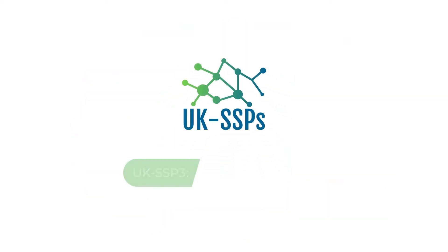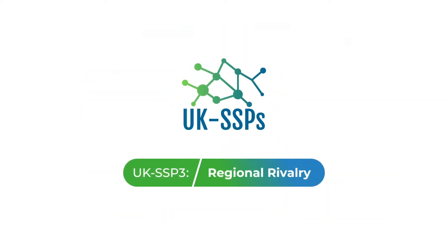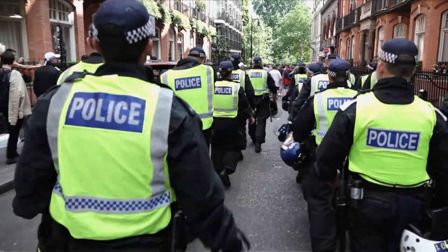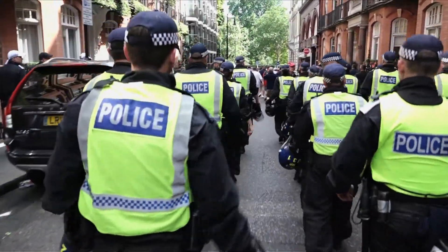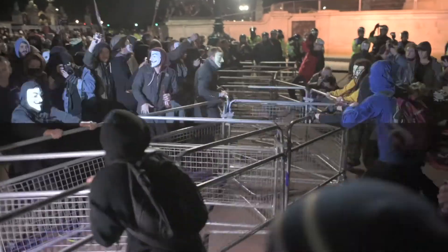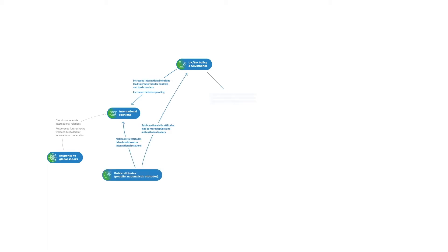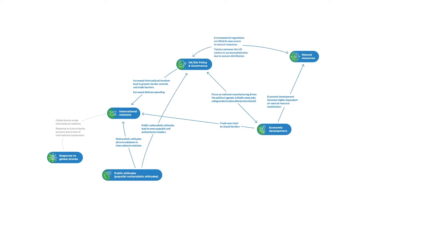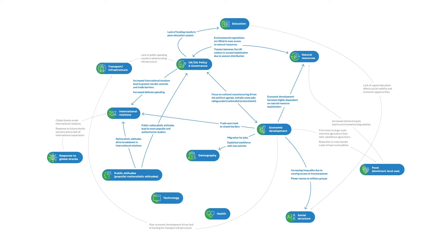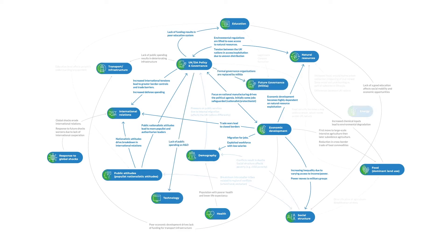UK SSP3, the regional rivalry scenario, describes the most dystopian future. It shows how increasing social and economic barriers may trigger international tensions, nationalisation in key economic sectors, job losses and eventually a highly fragmented society with the UK breaking apart. It represents a society where rivalry between regions and barriers to trade entrench reliance on fossil fuels and limit capacity to adapt to climate change.